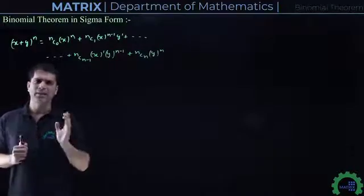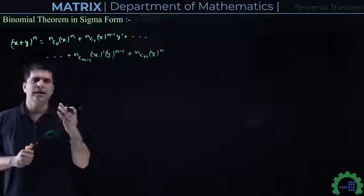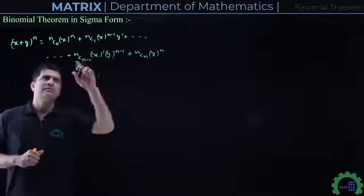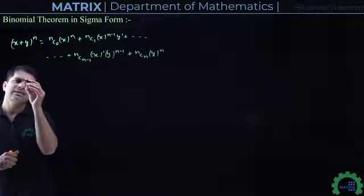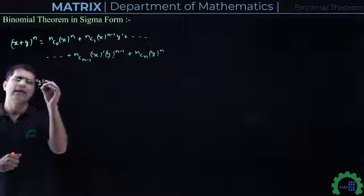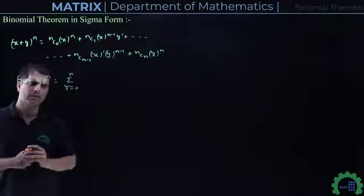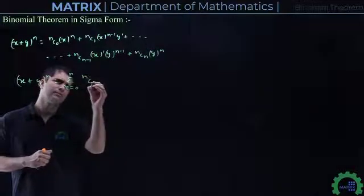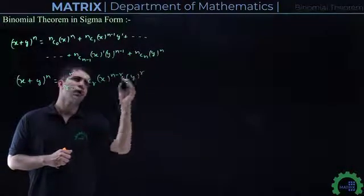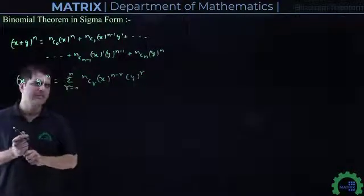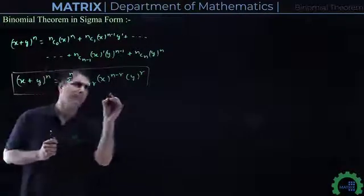This is our binomial expansion for (X + Y)^N. Now let's see how we can write this in sigma form. We can write: (X + Y)^N = Σ (R=0 to N) NCR · X^(N-R) · Y^R. This is very important — you should always remember it and actually memorize this.